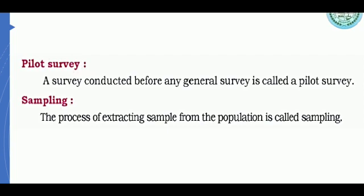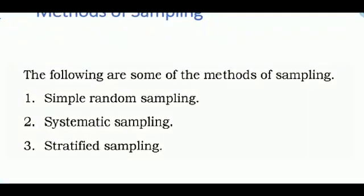A survey conducted before any general survey is called a pilot survey. Before conducting a big survey, you make a small survey first — for example, before organizing a birthday party or wedding function, you first go and make a small survey. The process of extracting a sample from the population is called sampling. There are three different methods of sampling: simple random sampling, systematic sampling, and stratified sampling.